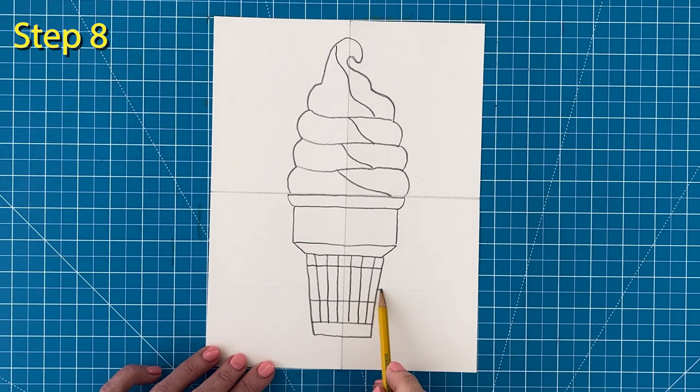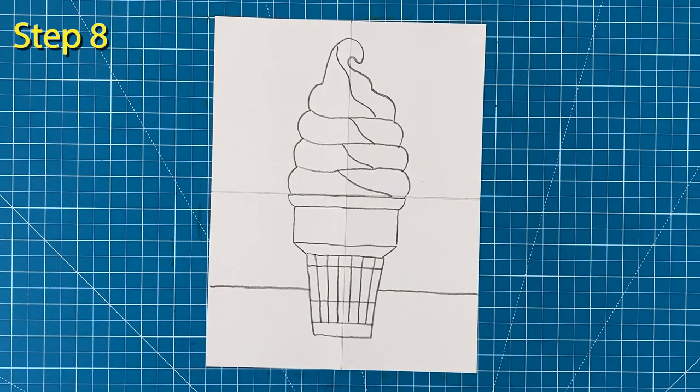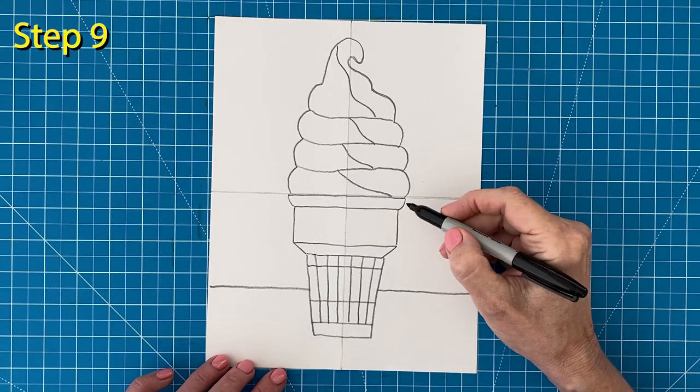So unless you want your ice cream cone to be floating in space, which might be kind of fun, add a line for a table or a horizon line. Step number nine. Now I'm ready to trace my drawing with my black marker.